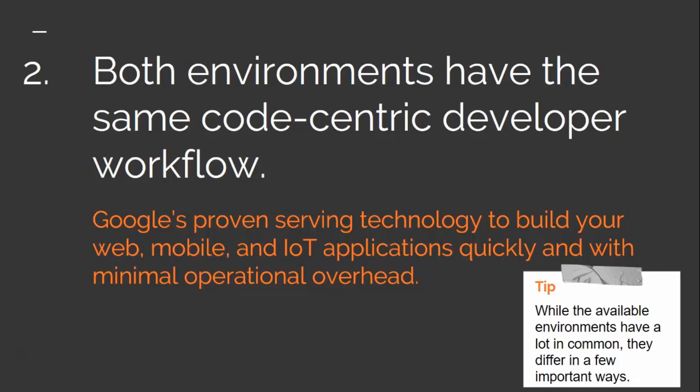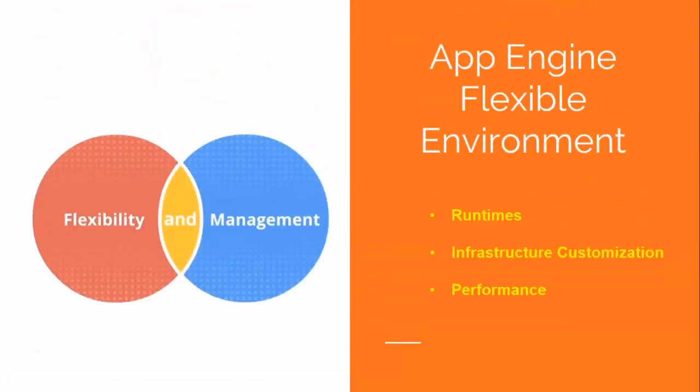The Java flexible environment allows developers to focus on writing code. App Engine's flexible environment automatically scales your app up and down while balancing the load. Microservices, authorization, SQL and NoSQL databases, traffic splitting, logging, versioning, security scanning, and a content delivery network are all actively supported.